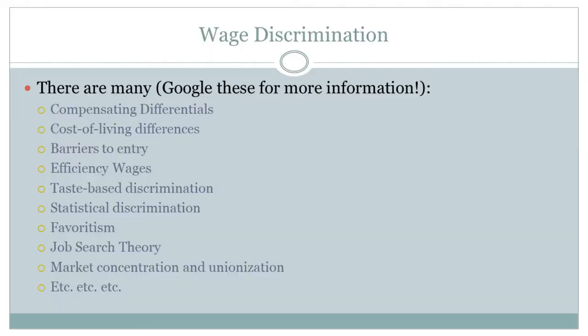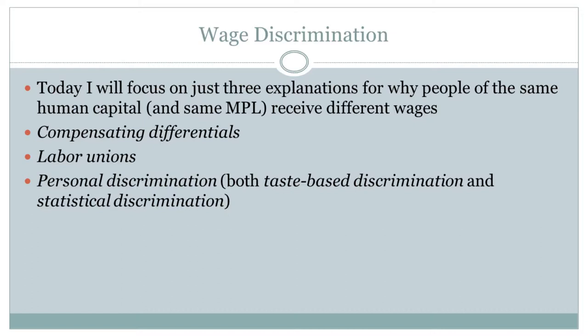Today we're going to talk about some of those. There are actually a lot of reasons why wages might differ other than differences in marginal productivity — efficiency wages, job search theory, market concentration, monopsony — which is like monopoly but for buyers, giving the employer market power to pay below what workers are worth. But today we're going to focus on three particular explanations: number one, compensating differentials; number two, labor unions; and number three, discrimination.